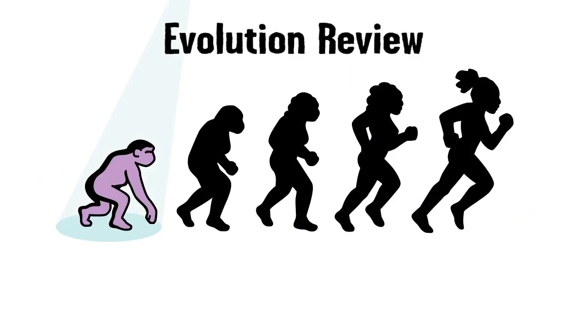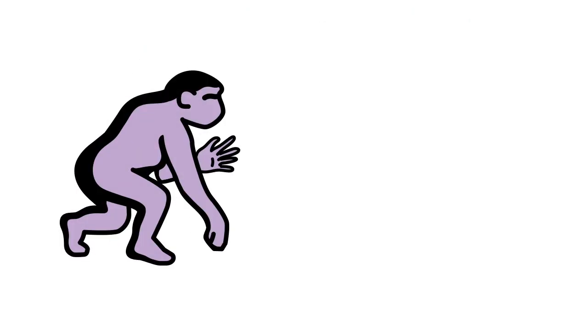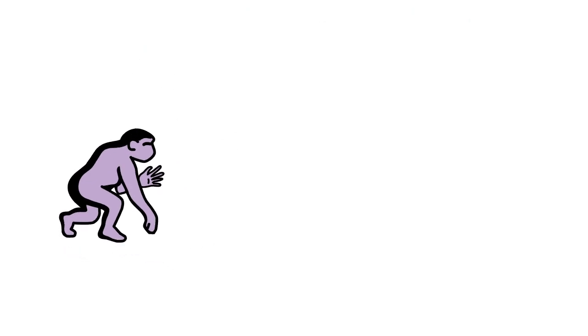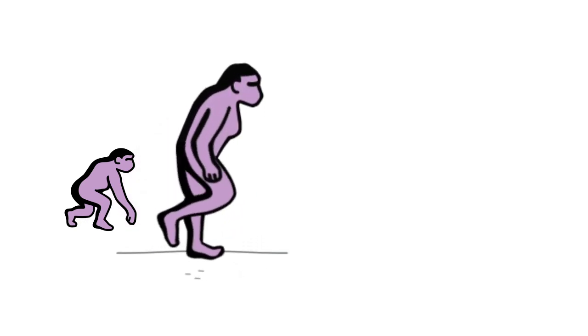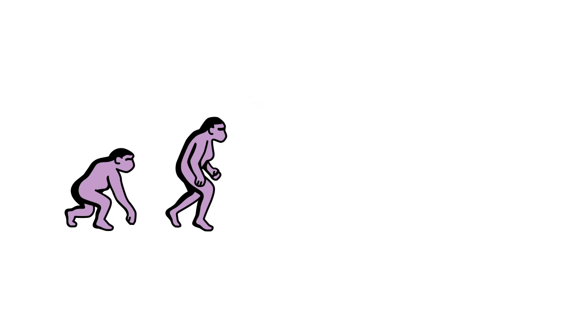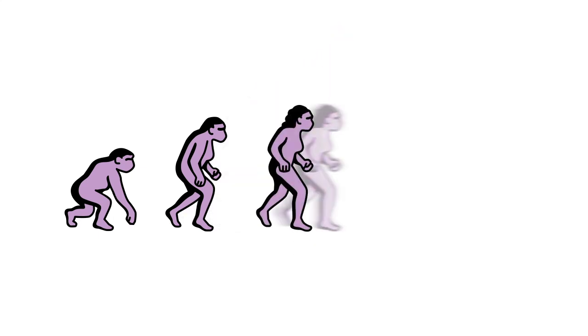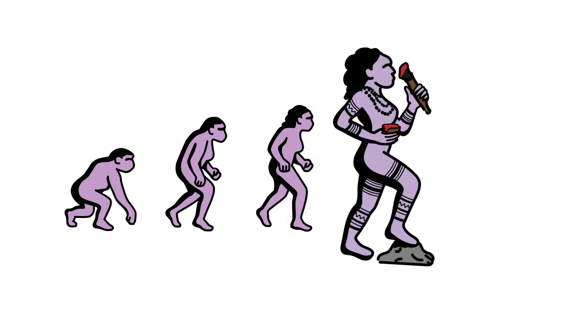Let's review the major turning points that we've learned about today. First, we evolved dexterous hands. Then we learned to walk upright. We started making tools. We discovered how to control fire. Over time, we started making art and jewelry.